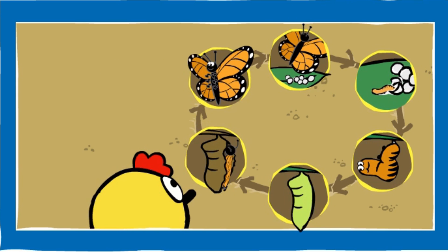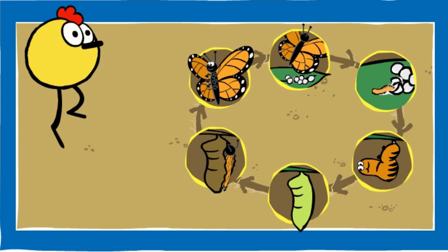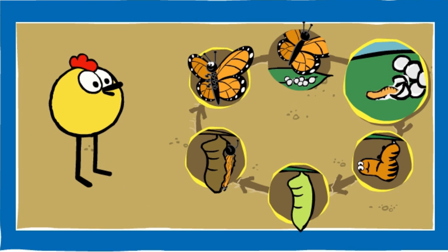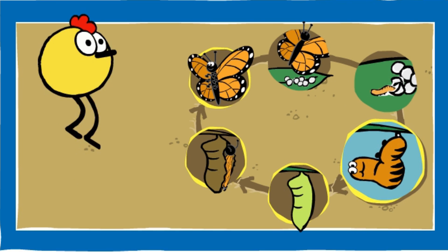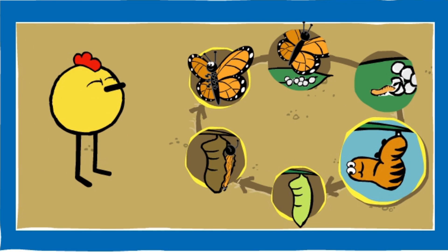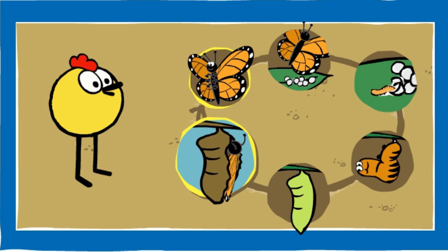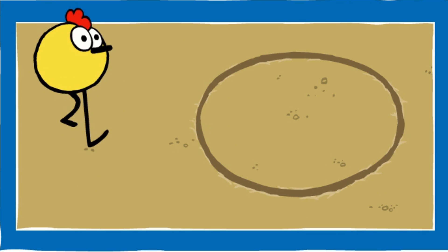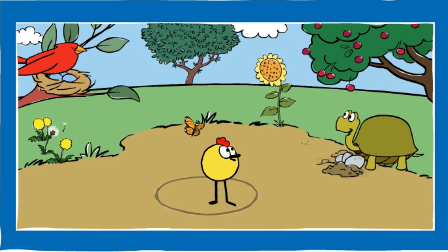Nice job! All the pictures are in the right order. This is how a butterfly grows and changes over time. A butterfly lays eggs. Caterpillars hatch from the eggs, eat leaves, and grow. The caterpillar attaches itself to a branch and creates a cocoon around itself. In the cocoon, the caterpillar changes into a butterfly. The butterfly begins to break out of the cocoon. Finally, the butterfly can fly around.